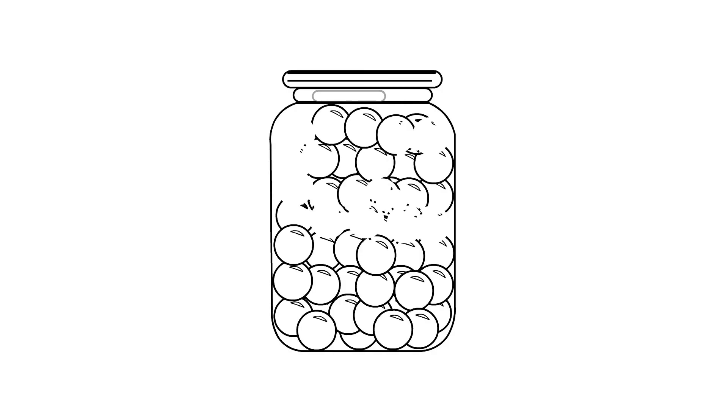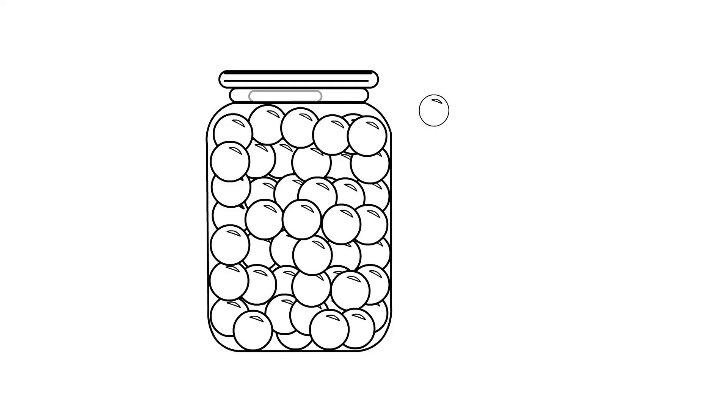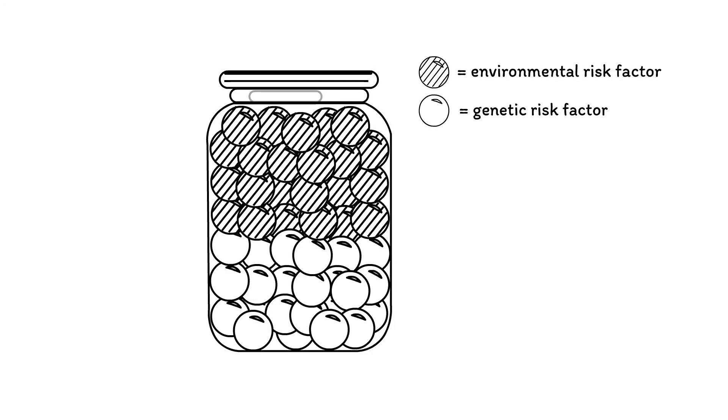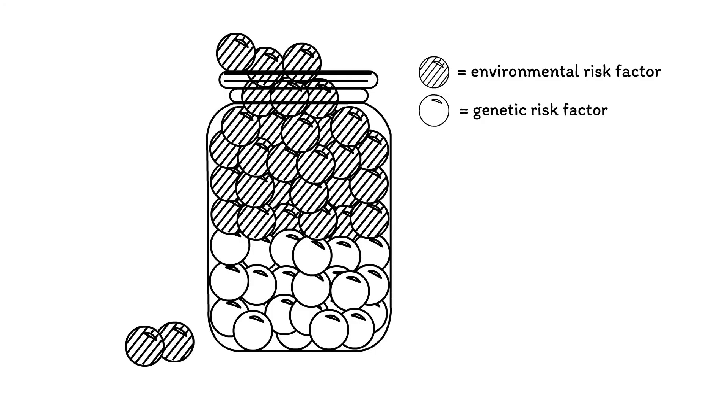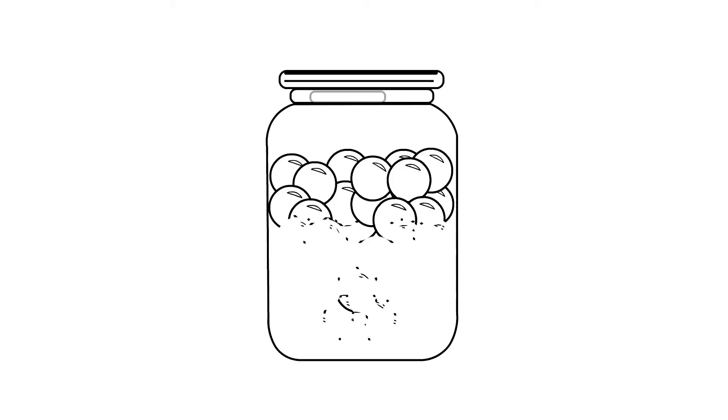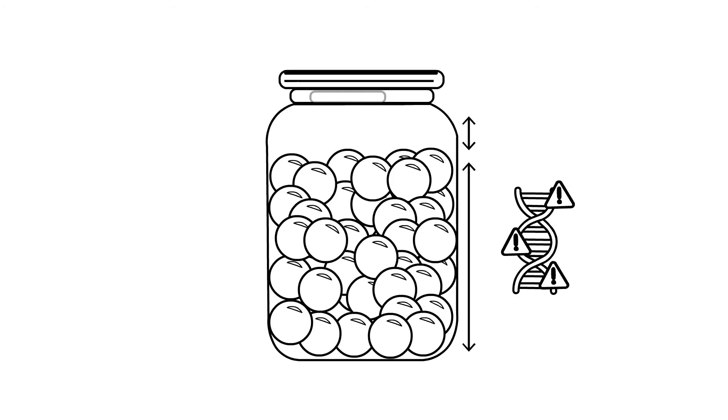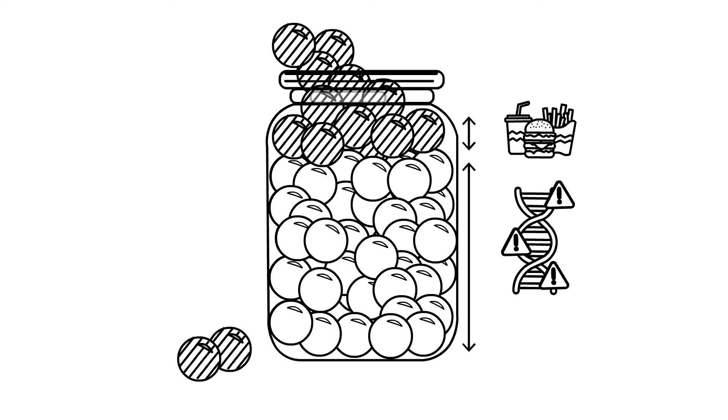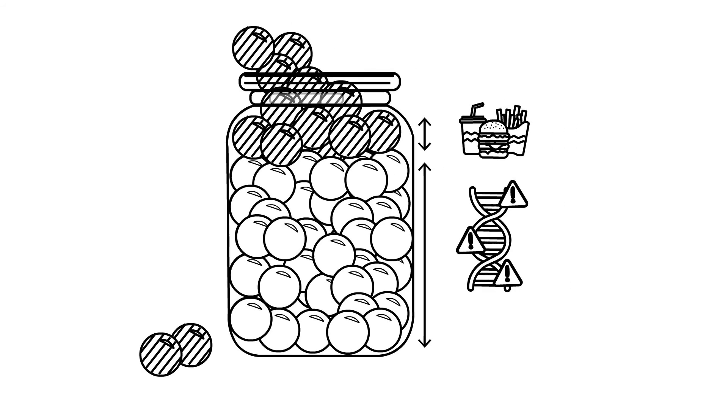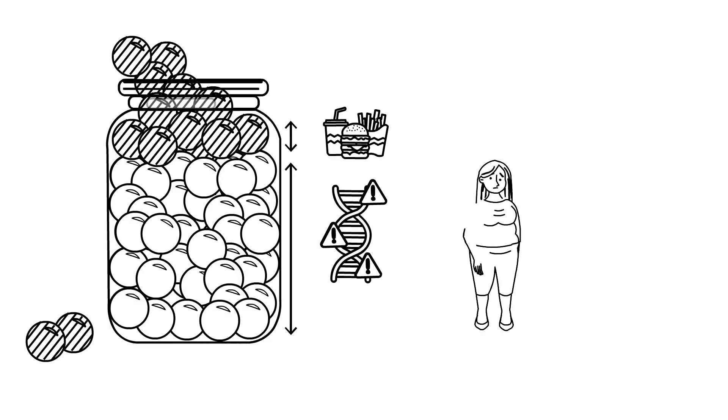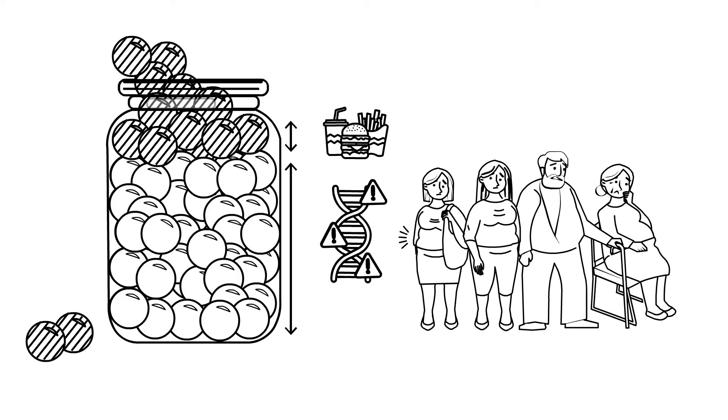Imagine a tall glass that can be filled with marbles. They represent the risk factors, either being genetic or environmental. A full glass means that the threshold is reached and you will become ill. Someone can have a large genetic predisposition, filling the glass already considerably, leaving less room for environmental effects before the glass is full. This can be the case for families in which obesity runs in the family.